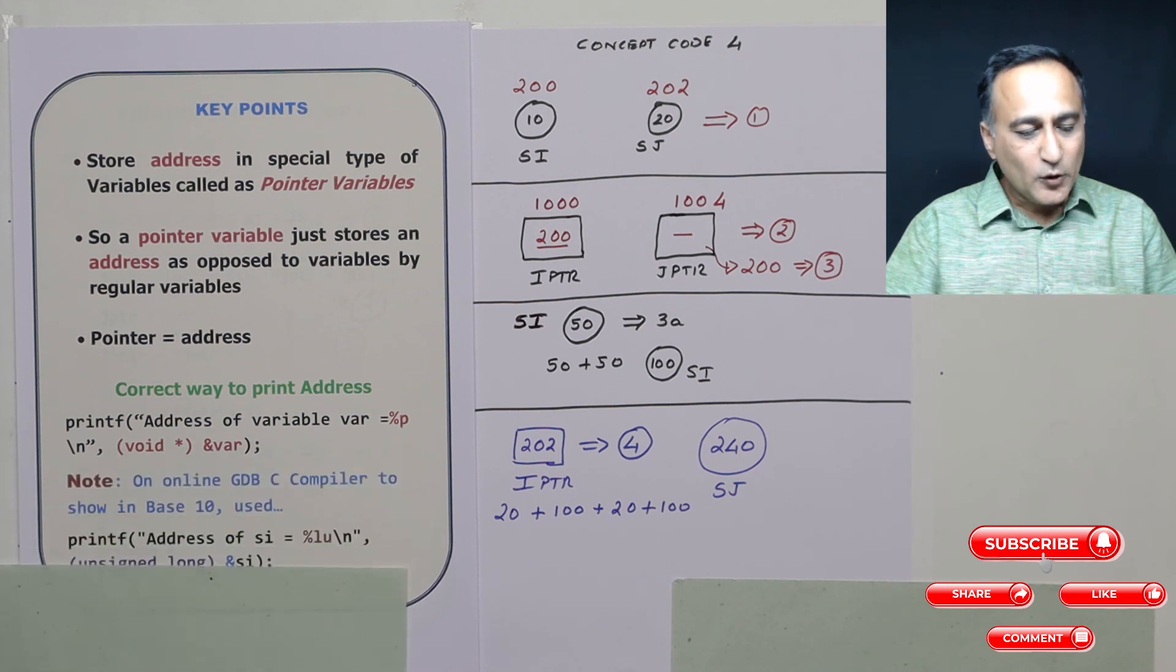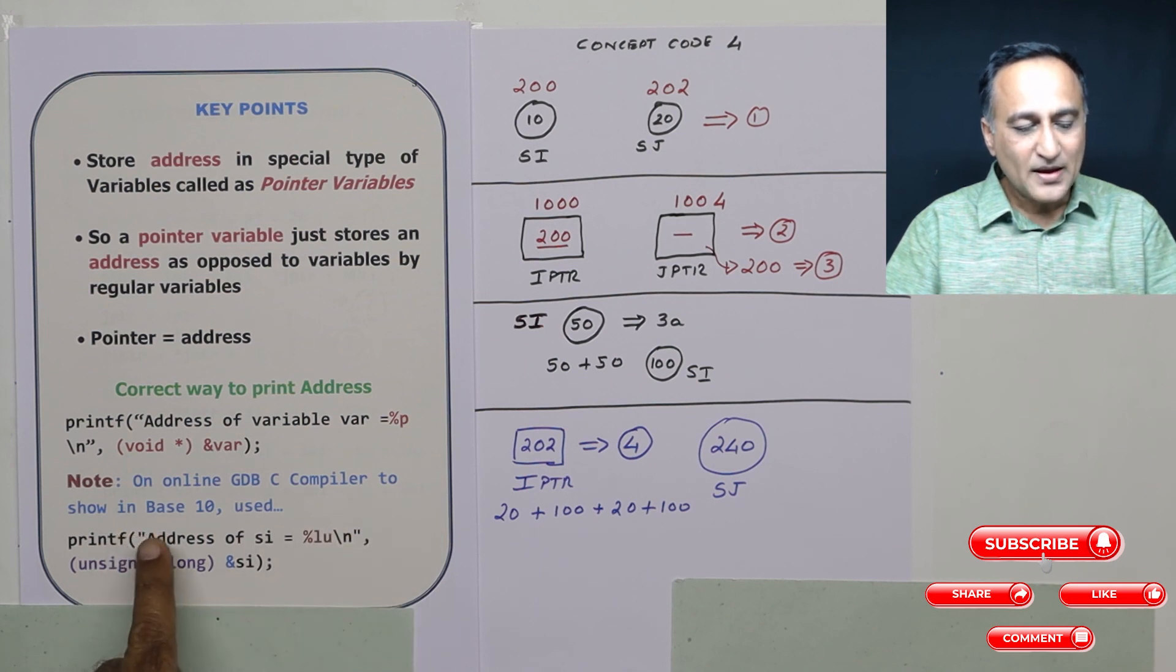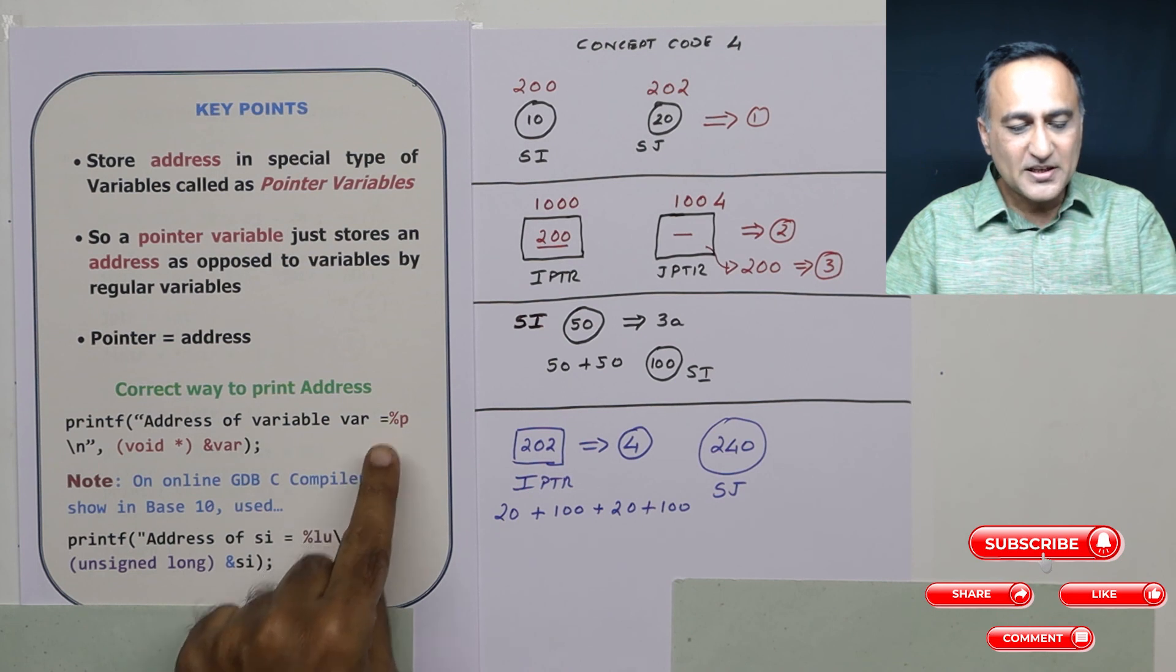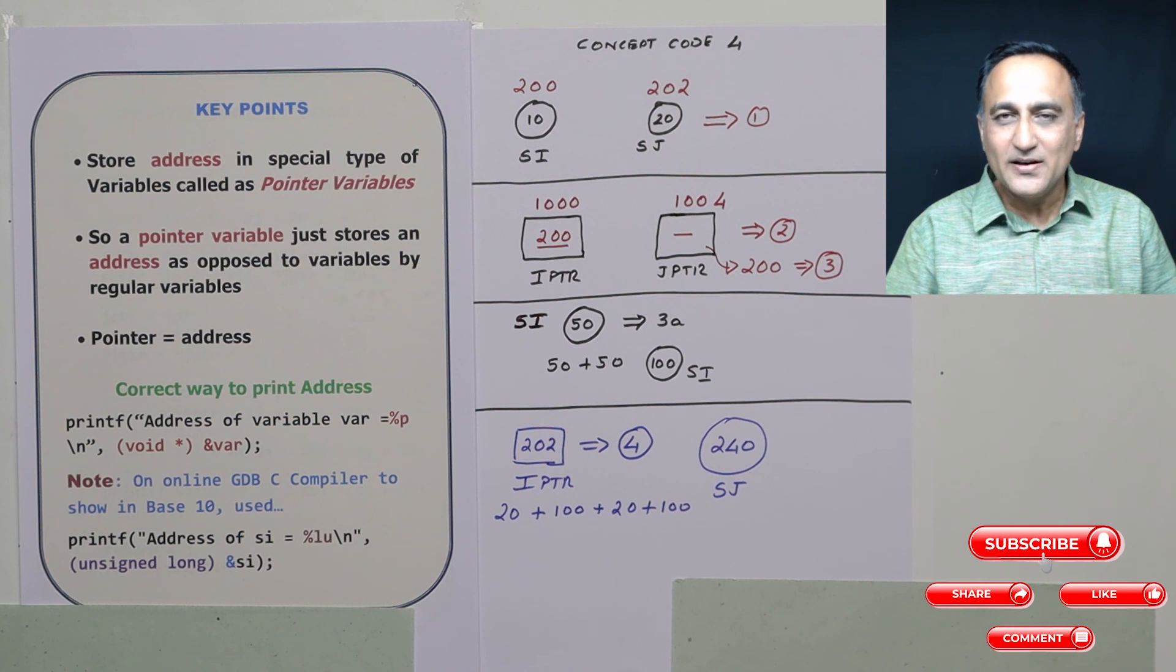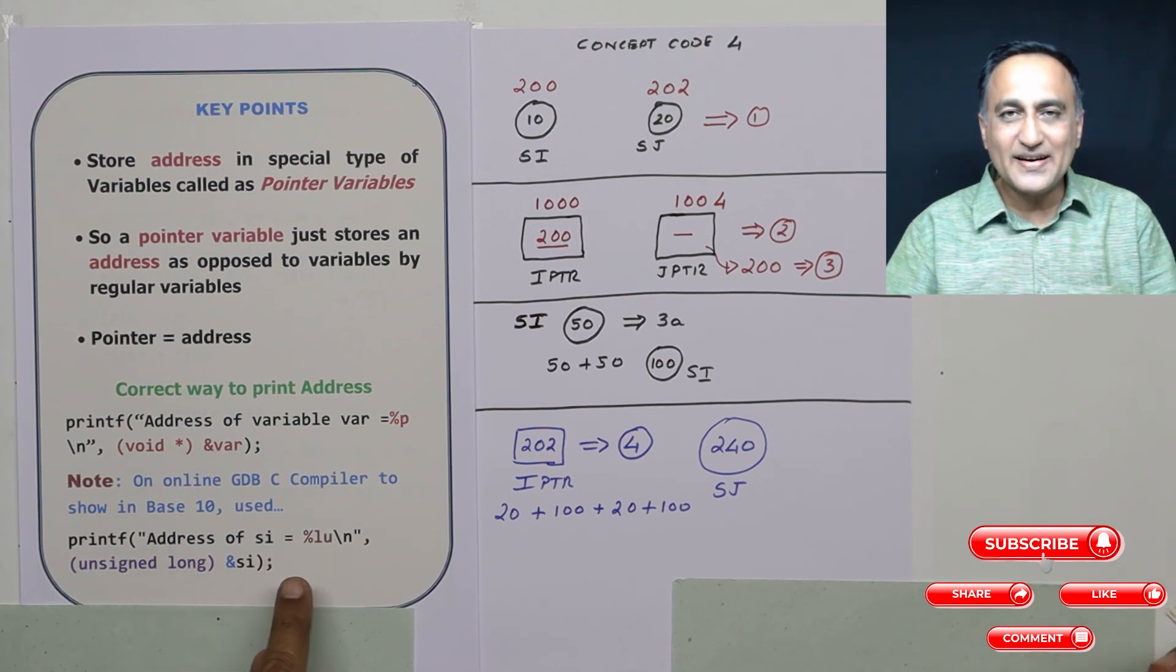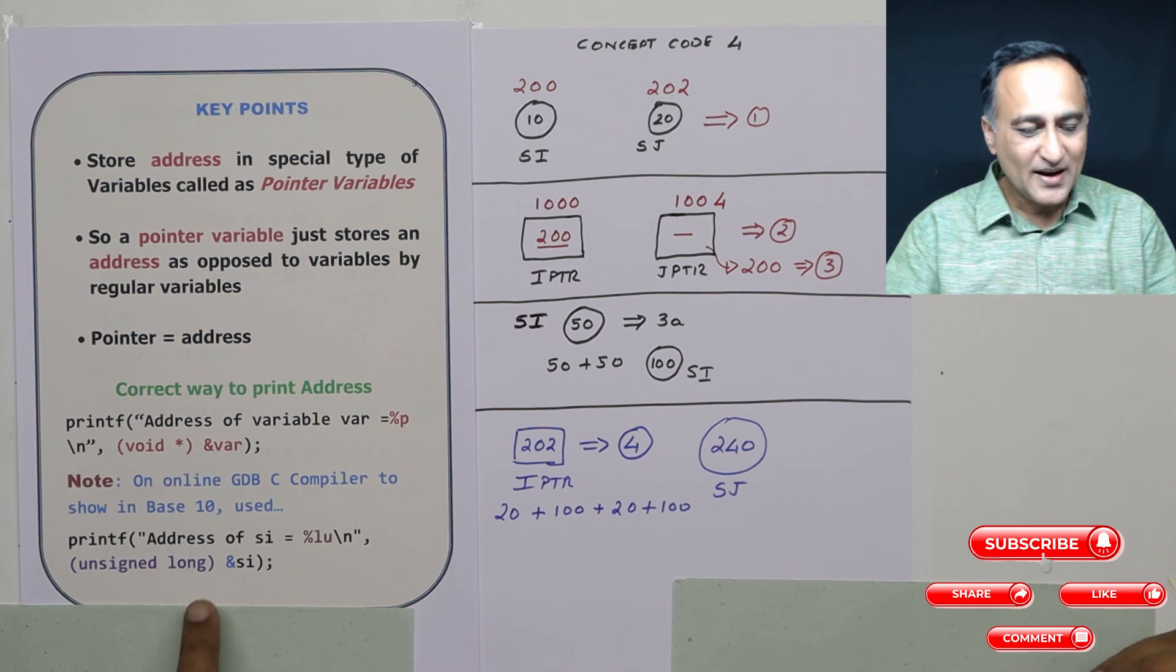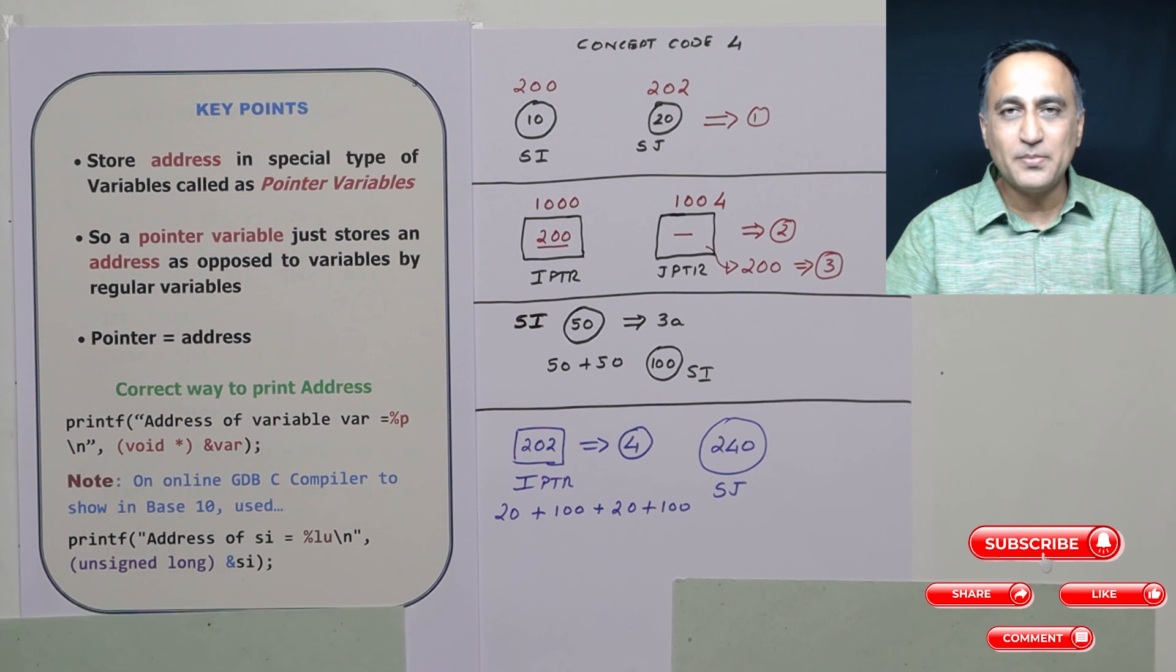But if you're looking at my programs, when I'm running on an online GDB C compiler, I'll be using this to print the address. There is a reason for this. Percentage p is going to print the address in hexadecimal numbers. That can be a little difficult for us to understand because we're not using hexadecimal in day to day life. So this way, what I'm doing is I'm converting the address into a long integer and I'm printing it as a normal base 10 number. So you're able to easily understand the base 10 number.